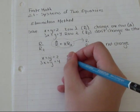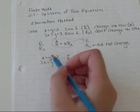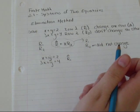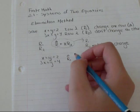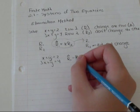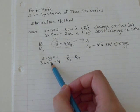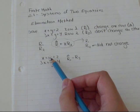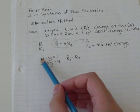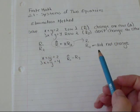So to do that, I am changing row one. And I'm going to do row one minus row two because then this Y minus this Y will become zero Y. So hopefully I'll get X plus zero Y equals something.